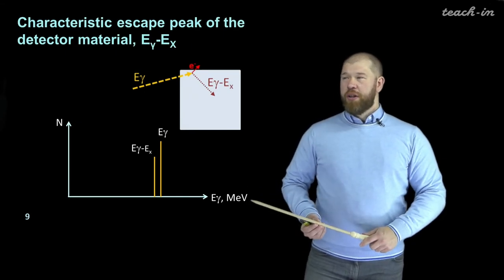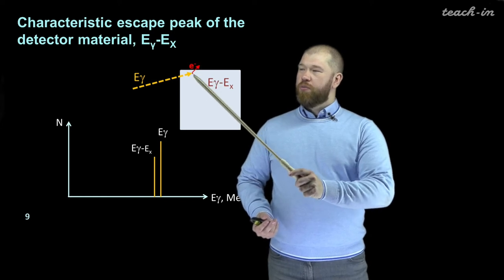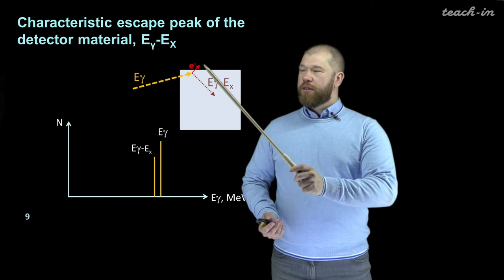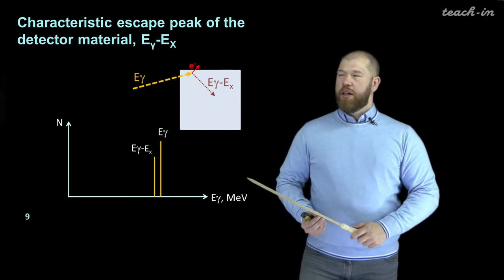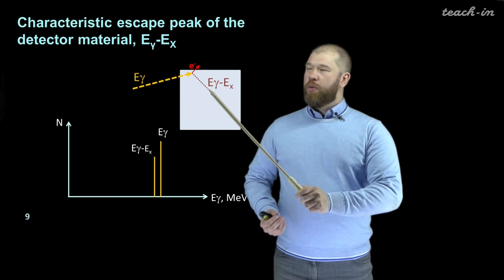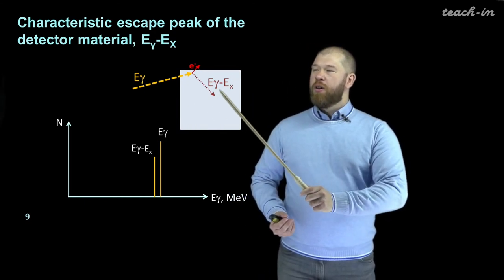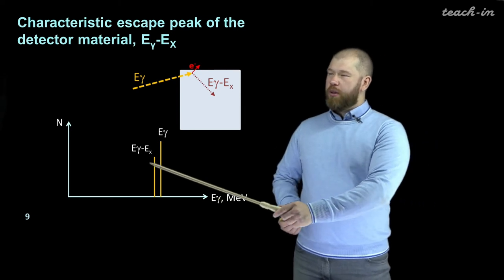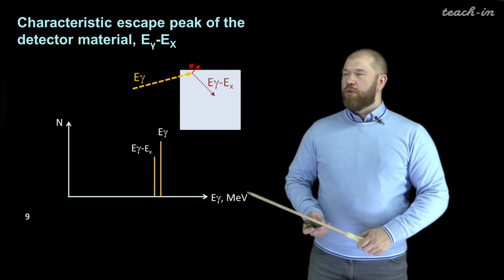The characteristic escape peak of the detector material occurs when a Compton-scattered electron is released from the material of the detector and we cannot see this electron, but we observe the scattered gamma quantum. The energy of this scattered gamma quantum will be the energy of the initial gamma quantum minus the binding energy of the electron in the atom. Since this is a certain energy value, we observe a certain peak with energy less than the initial gamma quantum energy.